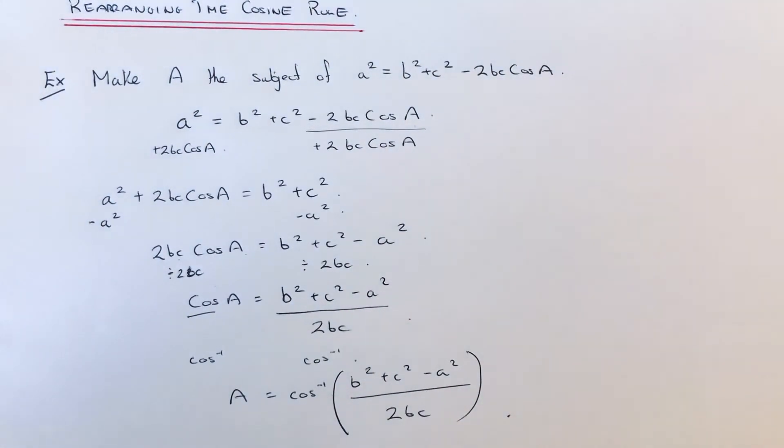So you can use that formula if you're given all three sides in a non-right-angled triangle. And that will give you one of the angles inside the triangle.